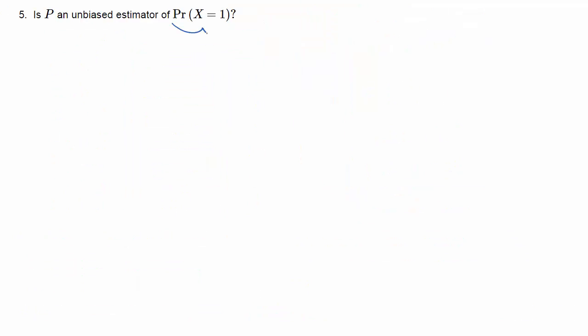Lastly, we're being asked the question whether P, the sample proportion, is an unbiased estimator of the probability of success, i.e. the probability that X is equal to 1, which is 0.7. So let me just replicate that probability distribution for the proportion.